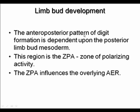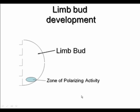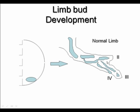The anteroposterior axis is important for digit formation and radius and ulnar formation. Key to AP patterning is the zone of polarizing activity, located in the posterior part of the limb bud, which influences the overlying apical ectodermal ridge. Classic experiments on the chick limb bud identified this ZPA — Zone of Polarizing Activity. When present, normal digits appear, as can be seen in the three digits of the normal chick limb bud.